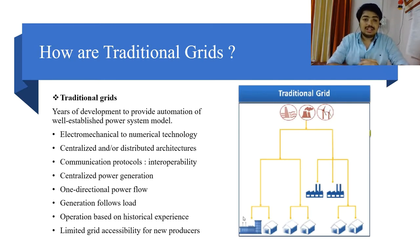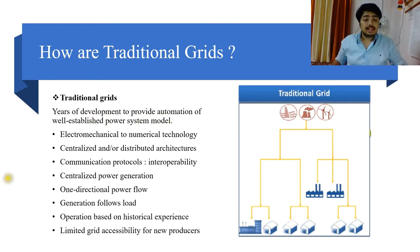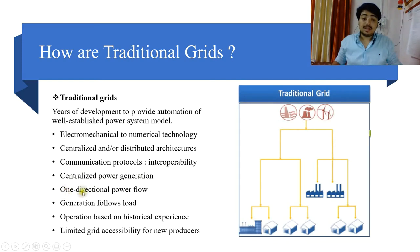A traditional grid is basically the grid we have been using for ages. It has a generating station supplying power to consumers, whether industry or household. Key points about traditional grids: it involved an electromechanical to numerical technology shift; it has a centralized or distributed network architecture, meaning one generating station provides power to multiple users; it has an interoperable communication protocol; and it uses centralized power generation — one generator, multiple users. Power flow is one-directional, from generation to distribution, with no reverse energy flow. Generation follows load, meaning generation varies depending on demand.